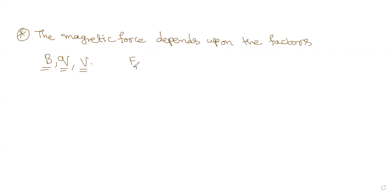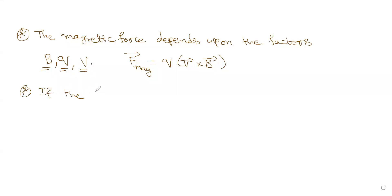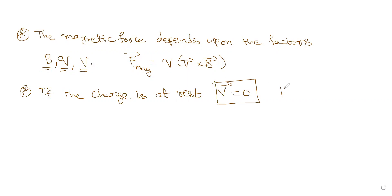F magnetic is given by q into v-bar cross B-bar. Now if the charge is at rest — assume that the charge is at rest — then v-bar is zero. If v-bar is zero, the magnetic force is also zero. This is a very important condition.